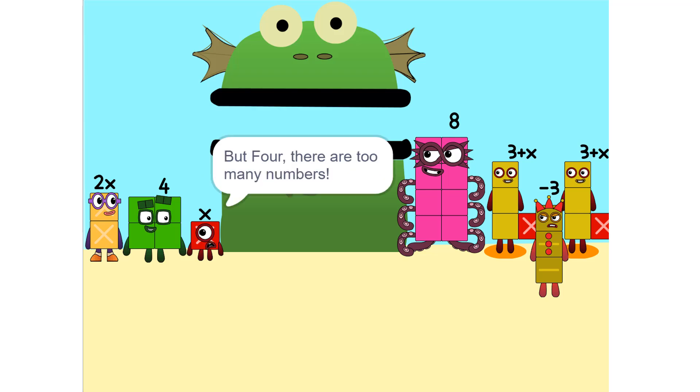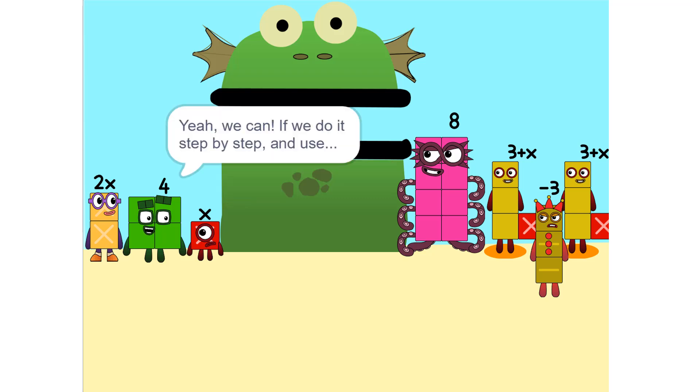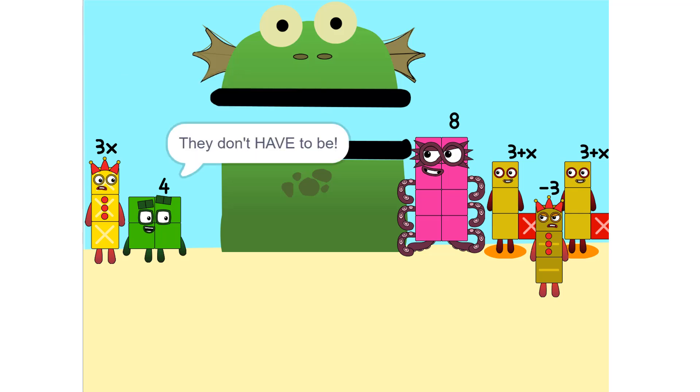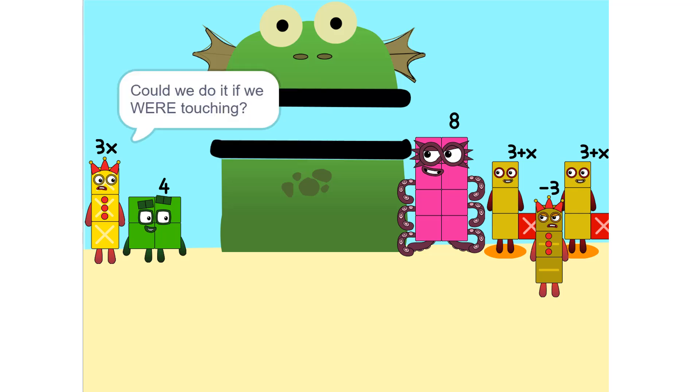Now we can figure out your value. But there are too many numbers. We'll never figure it out. Yeah we can, if we do it step by step and use a pencil. So let's get started. One thing we can do is add these two together. How did you do that? We weren't even touching. They don't have to be. Could we do it if we were touching? Yeah.